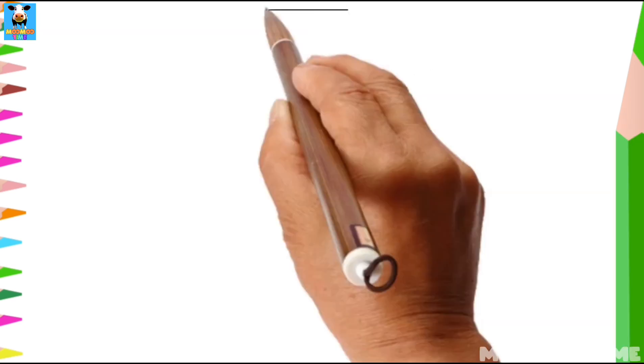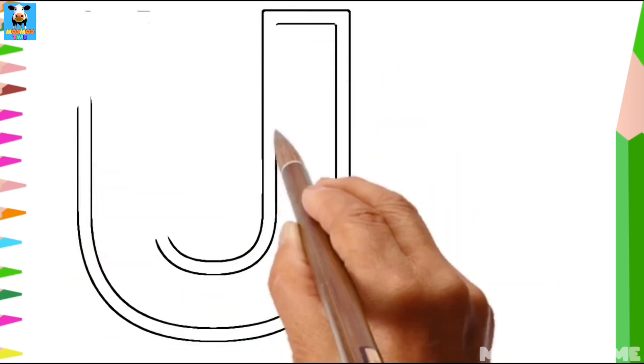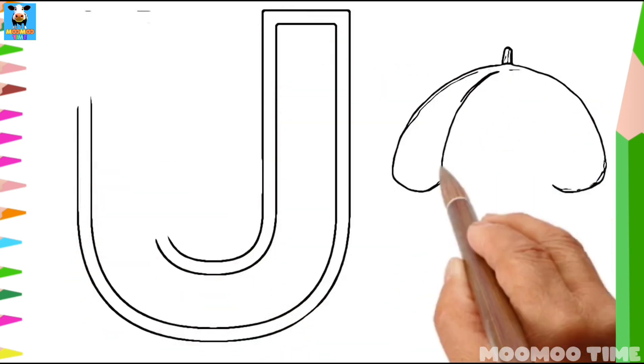Can you guess the alphabet? Yes, correct. This is U. U for Umbrella.